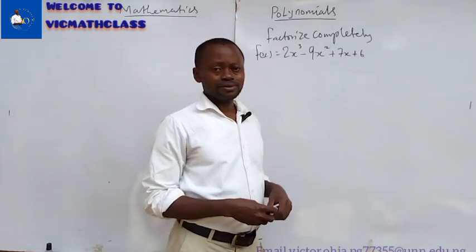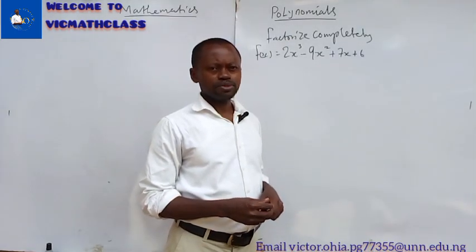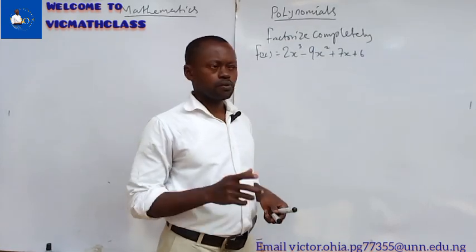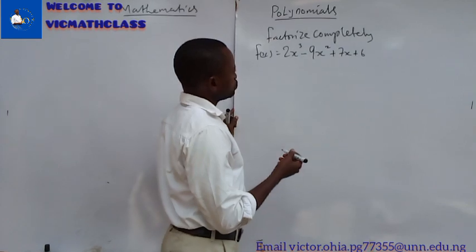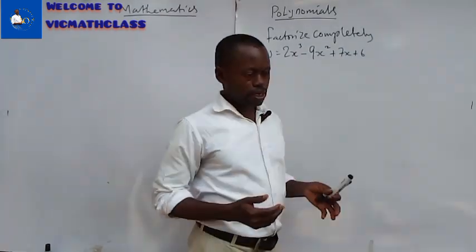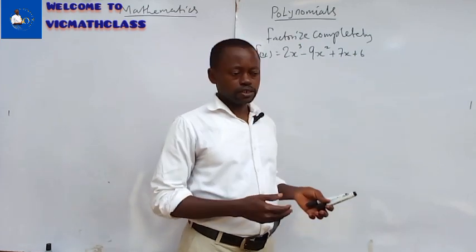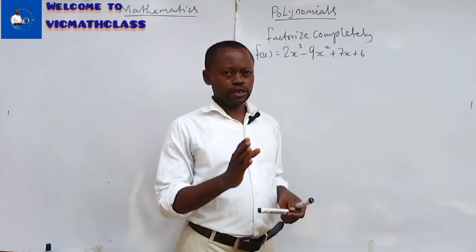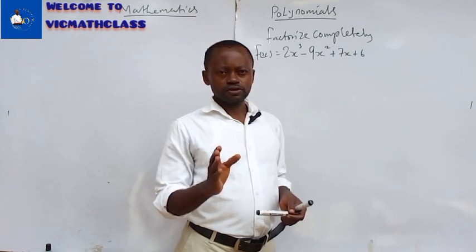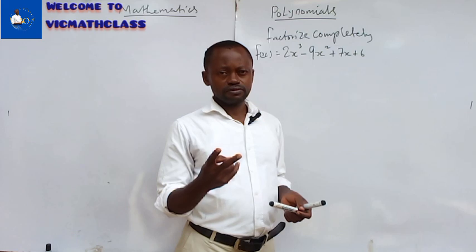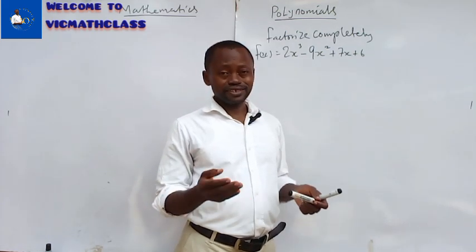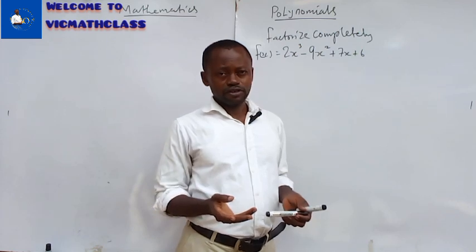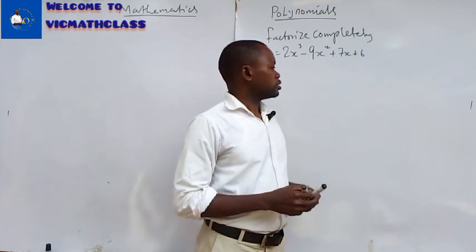So let's look at this example. How can one be able to factorize this cubic equation? There is a procedure you need to follow. Once given this cubic equation, the first thing you do is test whether it is factorizable. In quadratic equations you have two factors or two roots, but in cubic equations when you factorize them you have three factors or three roots.